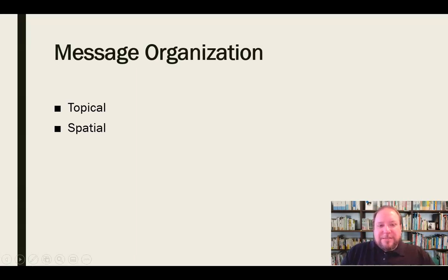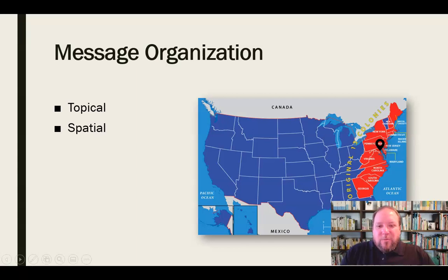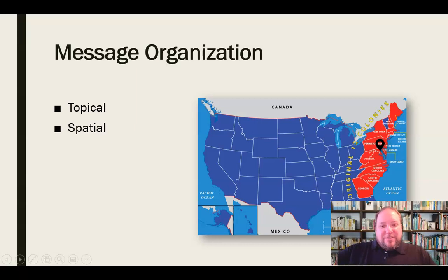Spatial organization is another possible type for persuasive speeches — centered around the use of space and where things exist in that space. For example, if I wanted to persuade people that Washington, D.C. is no longer the appropriate place for the U.S. capital, it originally made sense geographically as it was in the middle of the 13 original colonies. But as the United States has expanded greatly westward, it should be closer to the middle of the country, not on the far east coast. Spatial organization can be geographic like east to west, or top to bottom, inside to outside.